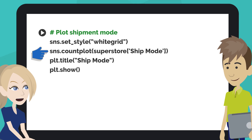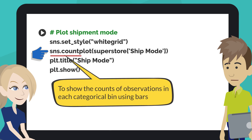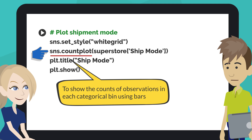What does this code mean? This code counts the number by ship mode and creates the bar plot. The Seaborn CountPlot method shows the counts of observations in each categorical bin using bars.